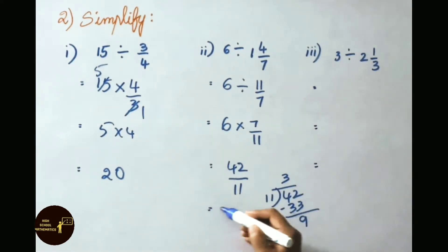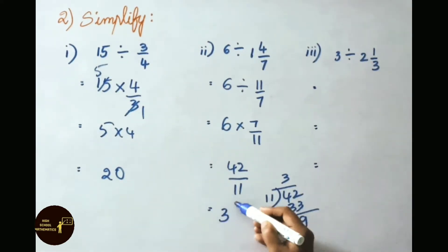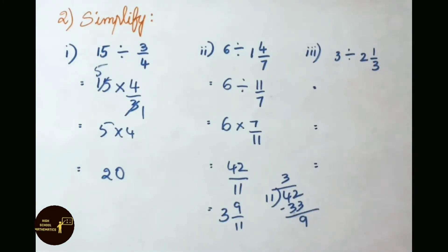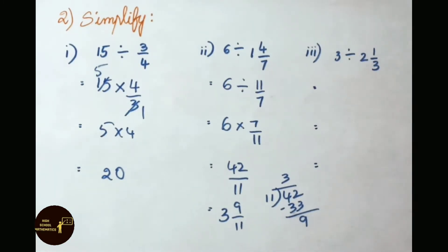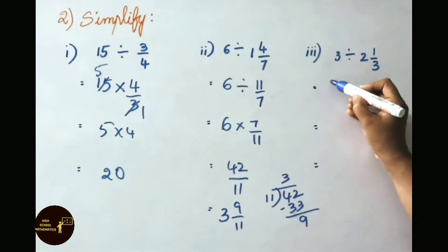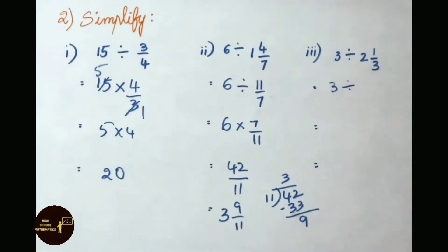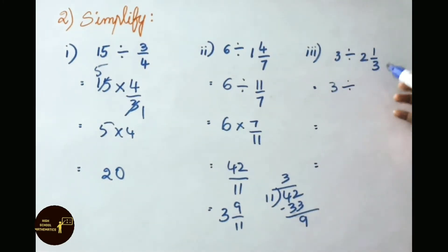Write down 3 and 9 by 11. See the third sum now: 3 divided by 2 and 1 by 3. 2 and 1 by 3 is a mixed fraction. Let us convert this to improper: 3 twos are 6, plus 1 is 7. Write down 7 by 3.